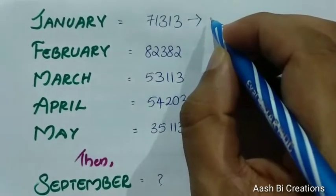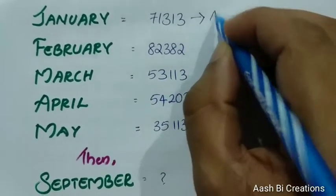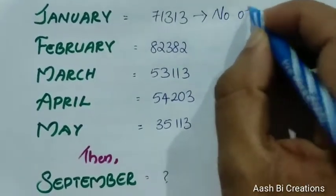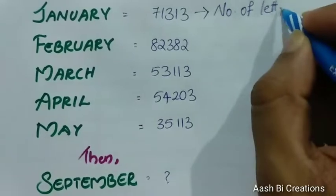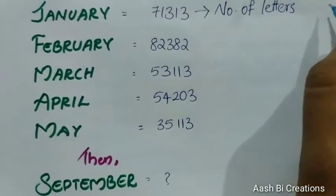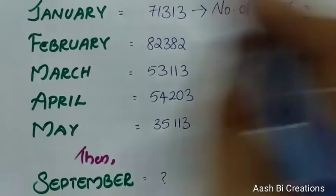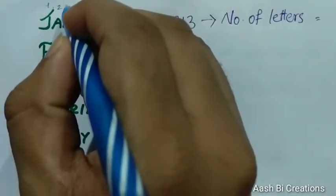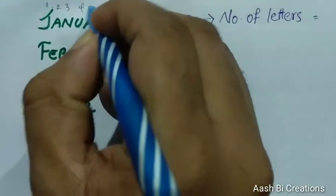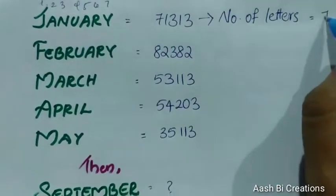January is equal to 71313. February, March, April, May — that's where we are going to check. Let's check January's letters: 1, 2, 3, 4, 5, 6, 7. Okay.